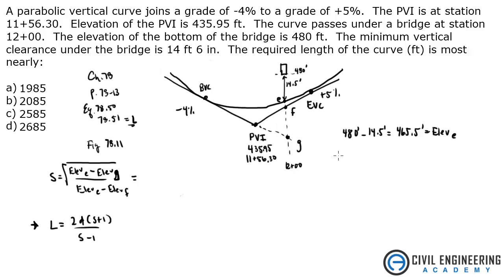Next thing we need to do is get the elevation of F, and to do that, we need to get D. In the diagram, you'll see that the distance between PVI and the center here is called D. And D is just going to be the difference between these two stations. So it's going to be 1200 minus 1156.3, and that gives me 43.7 feet. That's D.